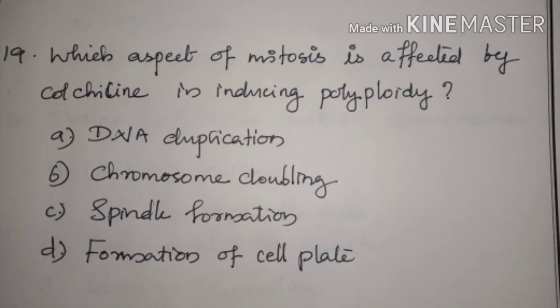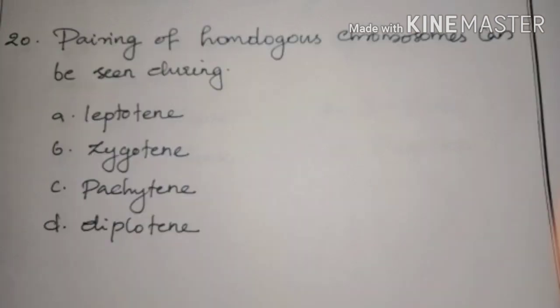Which aspect of mitosis is affected by colchicine in inducing polyploidy? Answer: Option C, spindle formation. Pairing of homologous chromosomes can be seen during — Answer: Option C, zygotene.